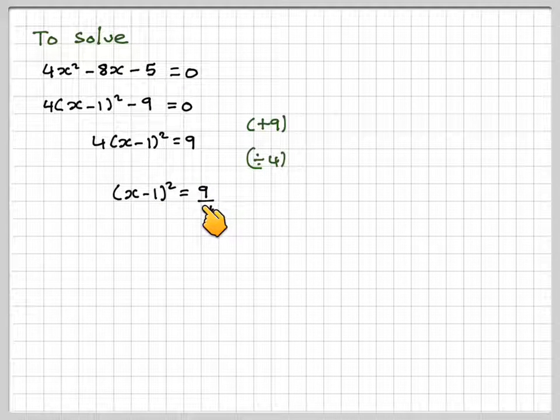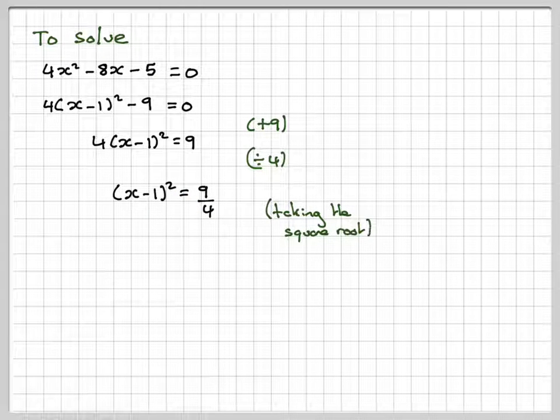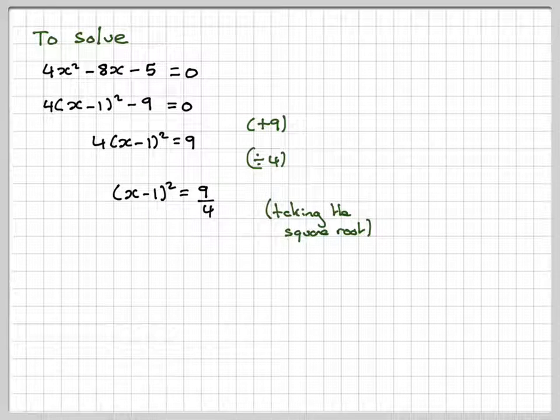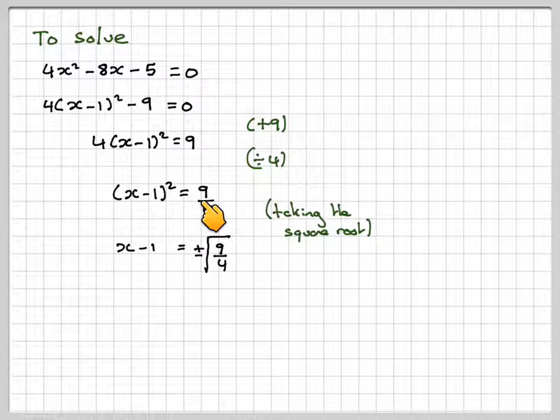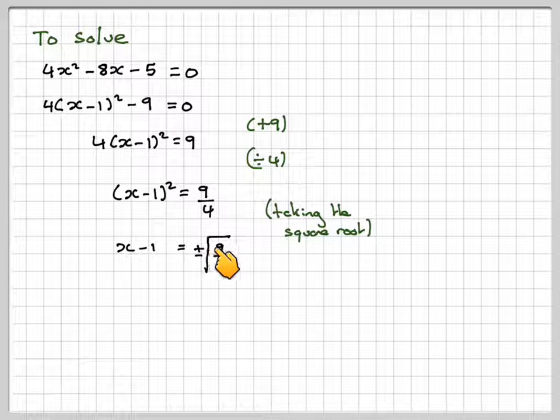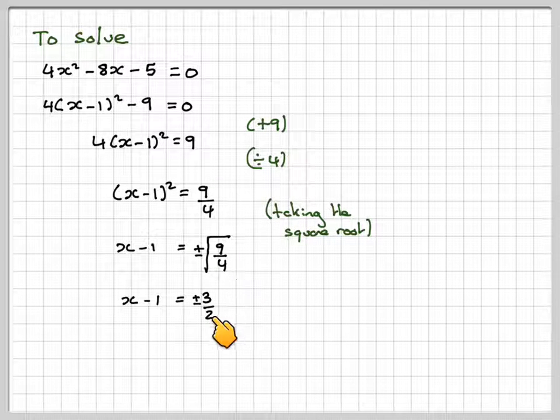Best to leave it as an improper fraction. The opposite of squaring is to take the square root. So taking the square root, you get x minus 1. And if you take the square root of 9 over 4, we get plus or minus 3 over 2. Now the square root of 9 is 3, and the square root of 4 is 2.